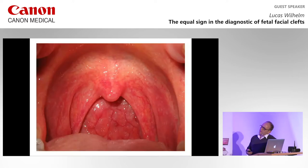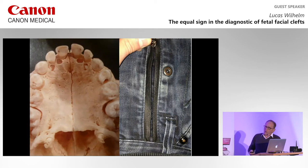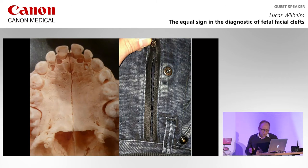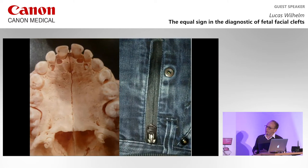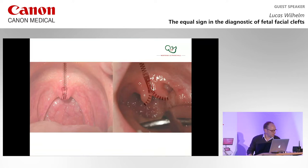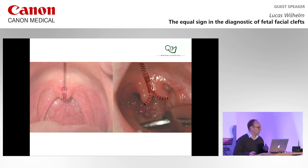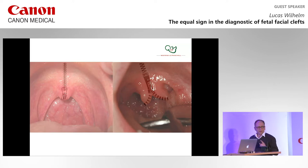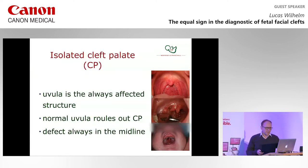There is one key indicator, and the key is the uvula. The closure of the secondary palate always works in the same way — it starts at the incisor foramen and goes continuously in the dorsal direction. Imagine this like the closure of a zipper. The completely closed zipper represents normal conditions; the almost completely closed zipper is the mildest form of isolated cleft palate, the uvula bifida; and the wide open zipper is the cleft of hard and soft palate. This means the uvula is the always-affected structure in all cases of cleft palate.